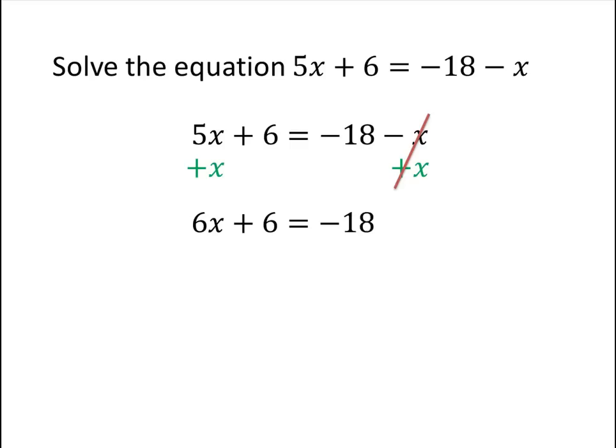So now we've achieved our goal of only having one x in our equation. Now we need to deal with the constants. So we want to have just x on one side of our equation, so we'll subtract 6 from both sides.